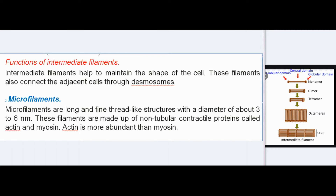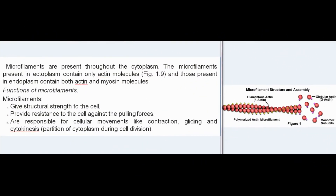Microfilaments are long and fine thread-like structures with a diameter of about 3 to 6 nm, made up of non-tubular contractile proteins called actin and myosin. Actin is more abundant than myosin. Microfilaments are present throughout the cytoplasm. Those present in ectoplasm contain only actin molecules, while those in endoplasm contain both actin and myosin molecules.